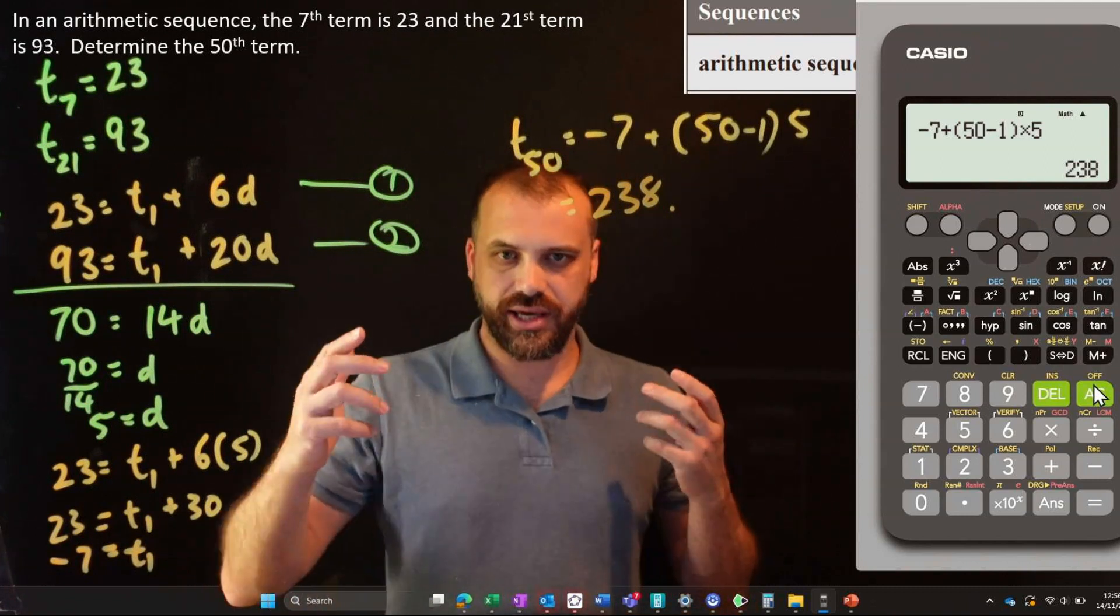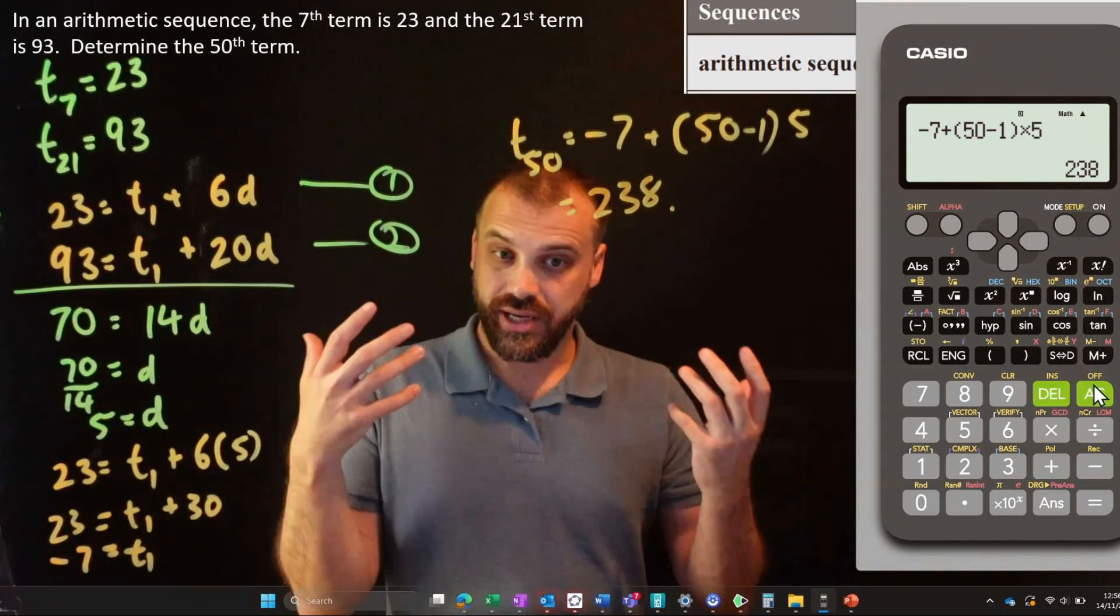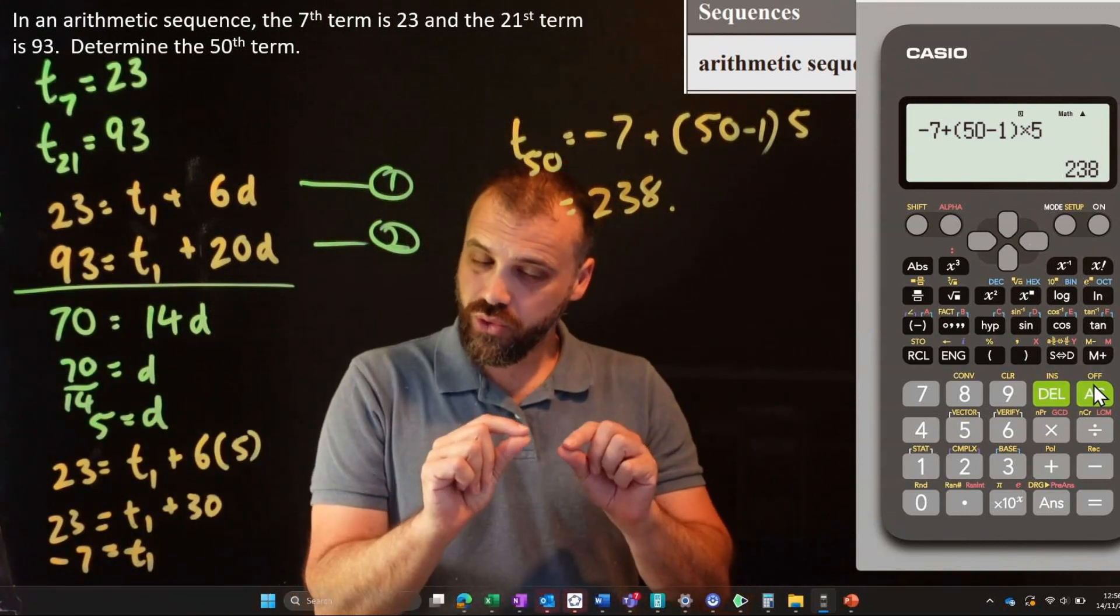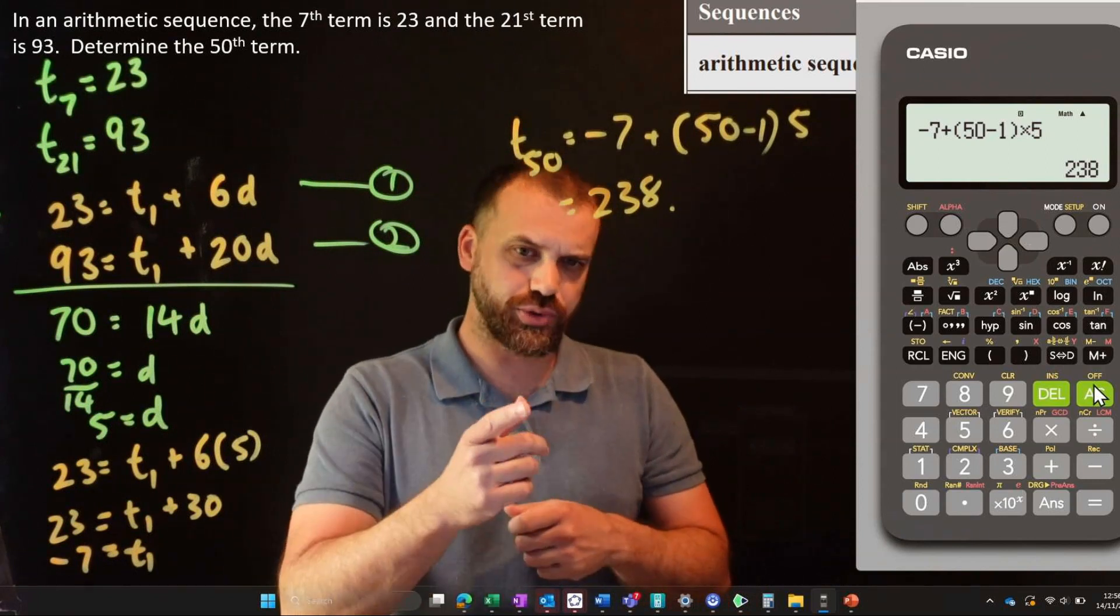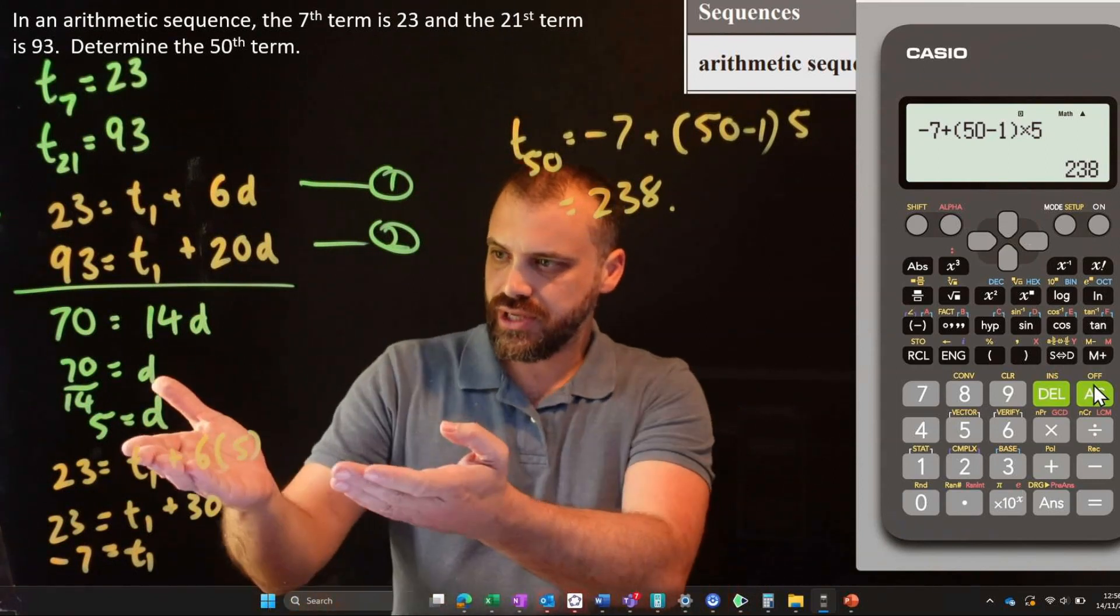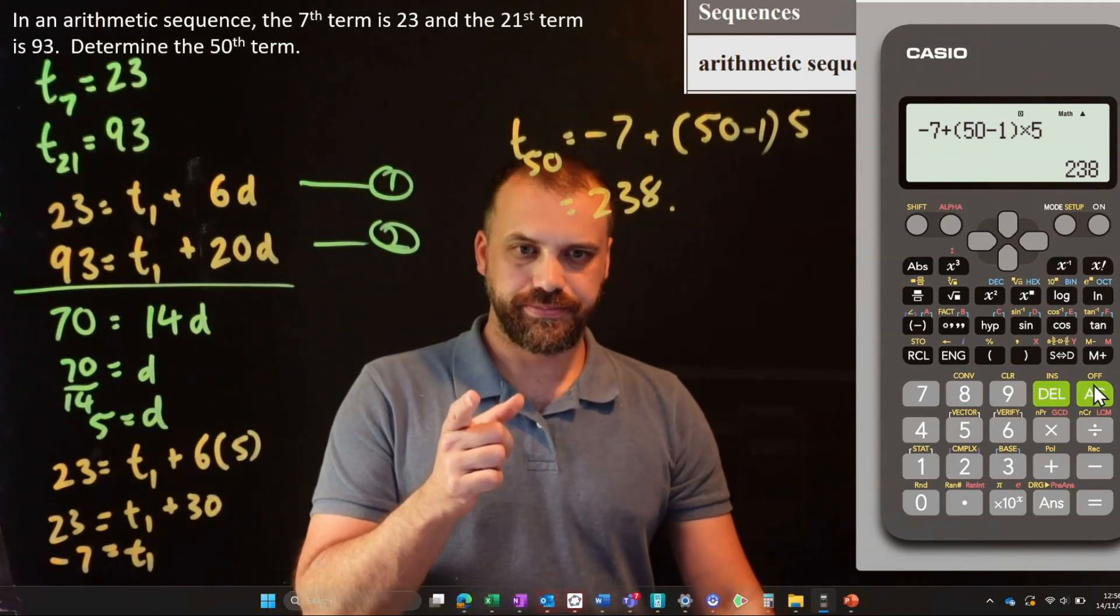So that's a classic. Like I said, if you've got some term and some other term, create two equations and start working from there. Or you can use that sneaky other method where you logic your way towards finding the common difference, and then once you've got your common difference, move forward from there. Done? Done.